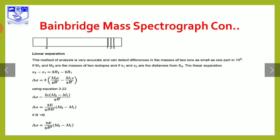x2 minus x1 equals 2R2 minus 2R1. So delta x equals 2(m2V divided by qB') minus (m1V divided by qB'). Simplifying: delta x equals 2V(m2 minus m1) divided by (qB'). Since V equals E/B: delta x equals 2E(m2 minus m1) divided by (qBB'). If B' equals B, then delta x equals 2E(m2 minus m1) divided by (qB squared).